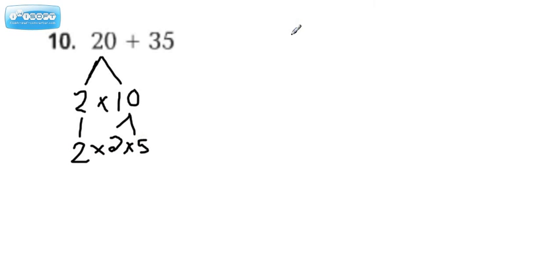If I kind of rewrite this neatly, I'm just going to put it over here. The prime factorization for 20 is 2 times 2 times 5.